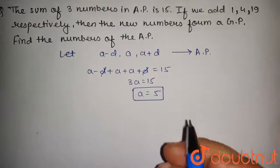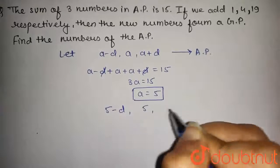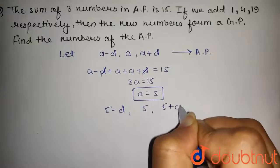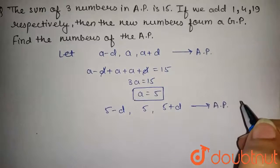Now, on putting A equals 5, the numbers will become 5-D, 5 and 5 plus D. This is in AP.